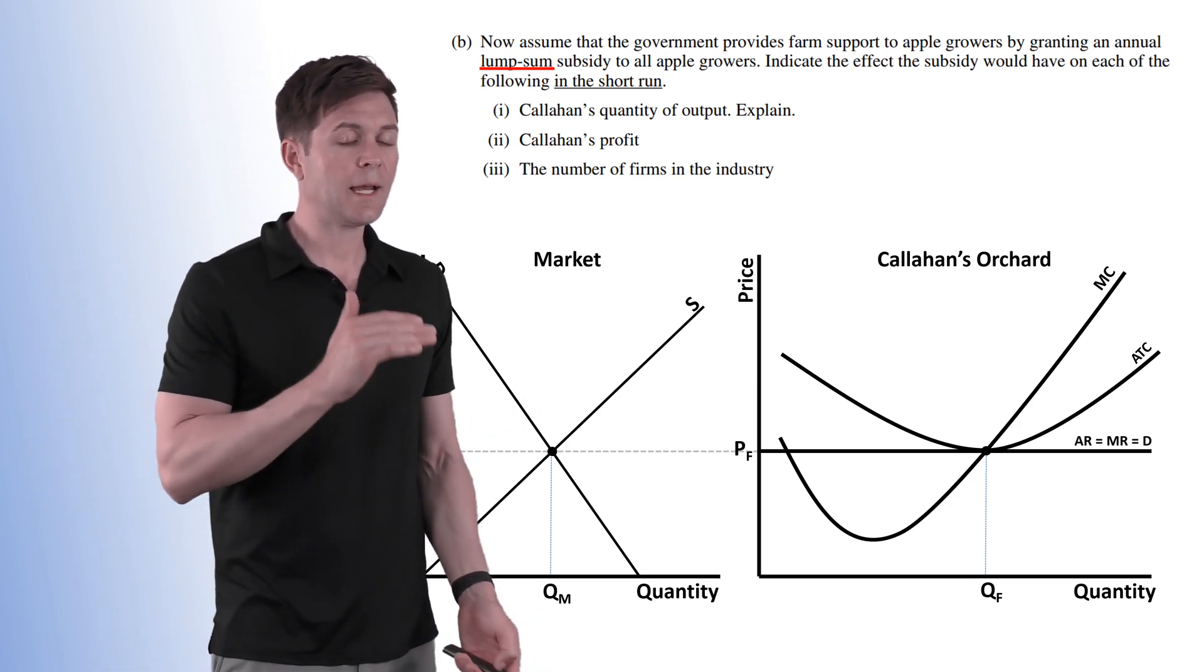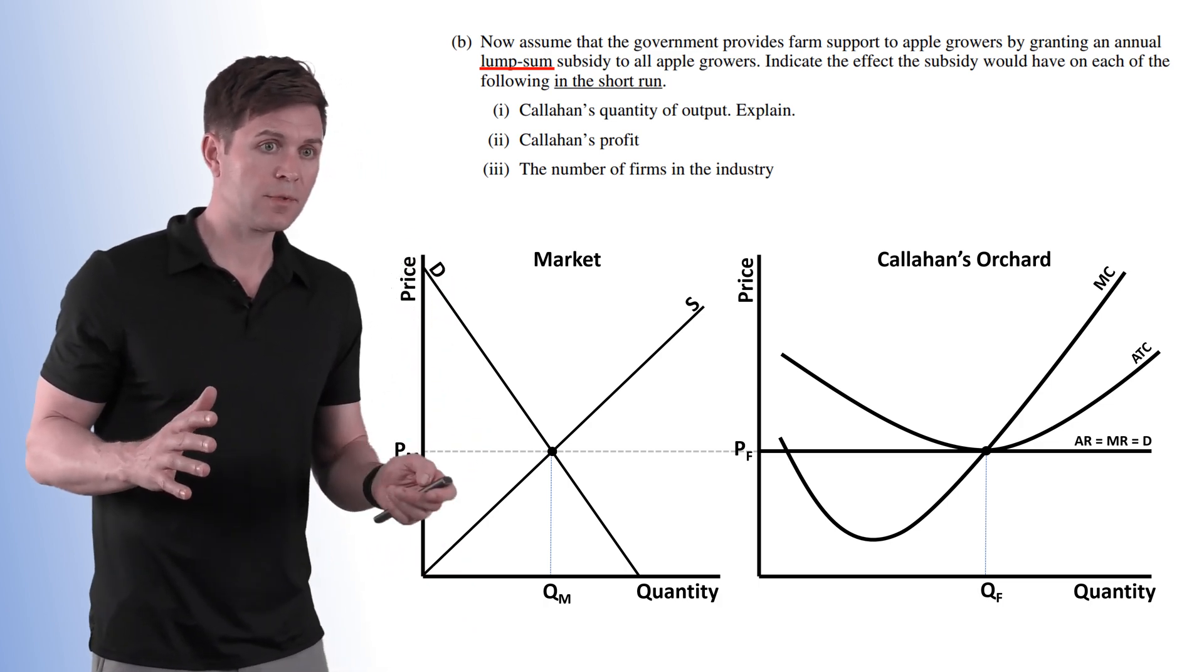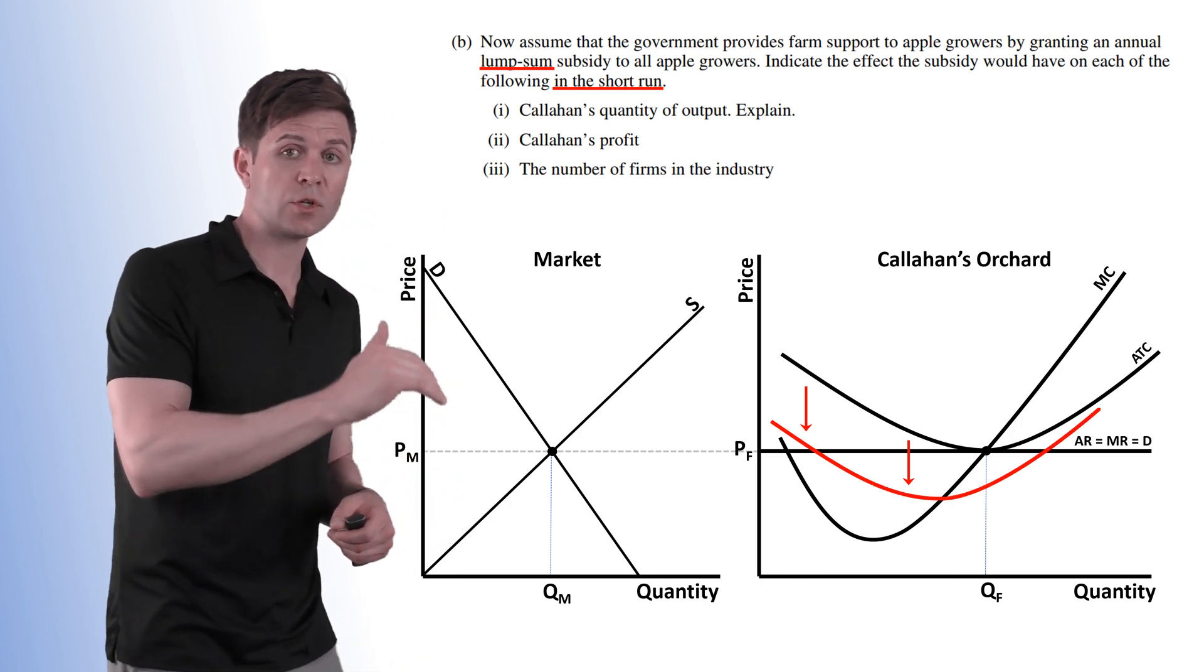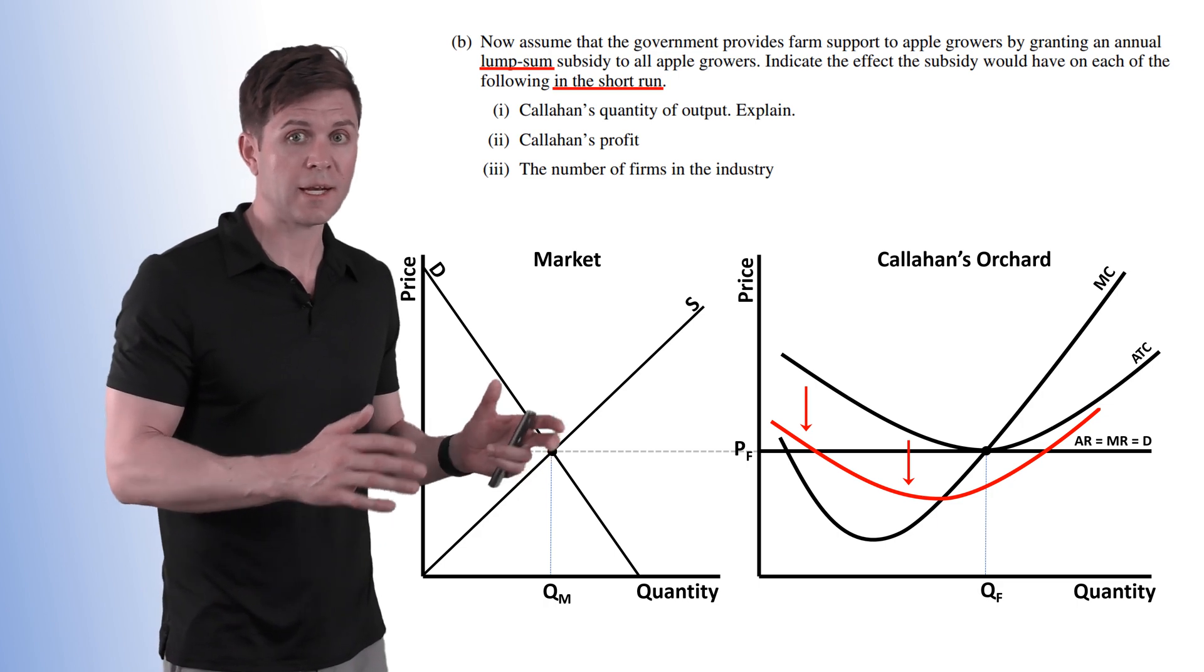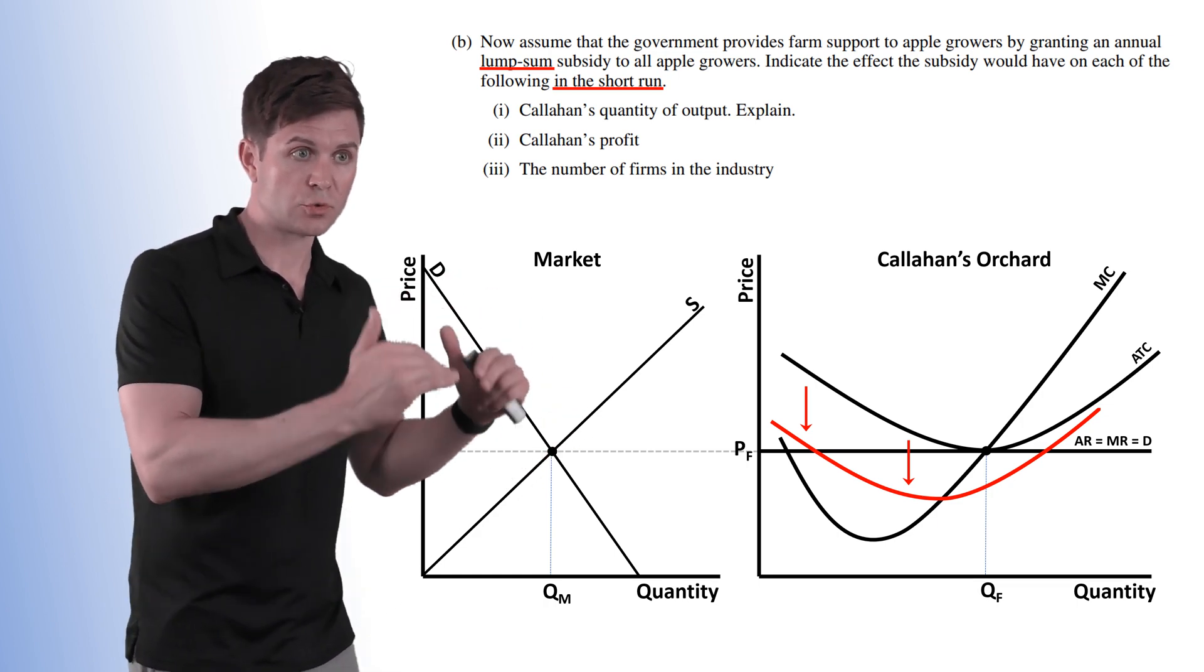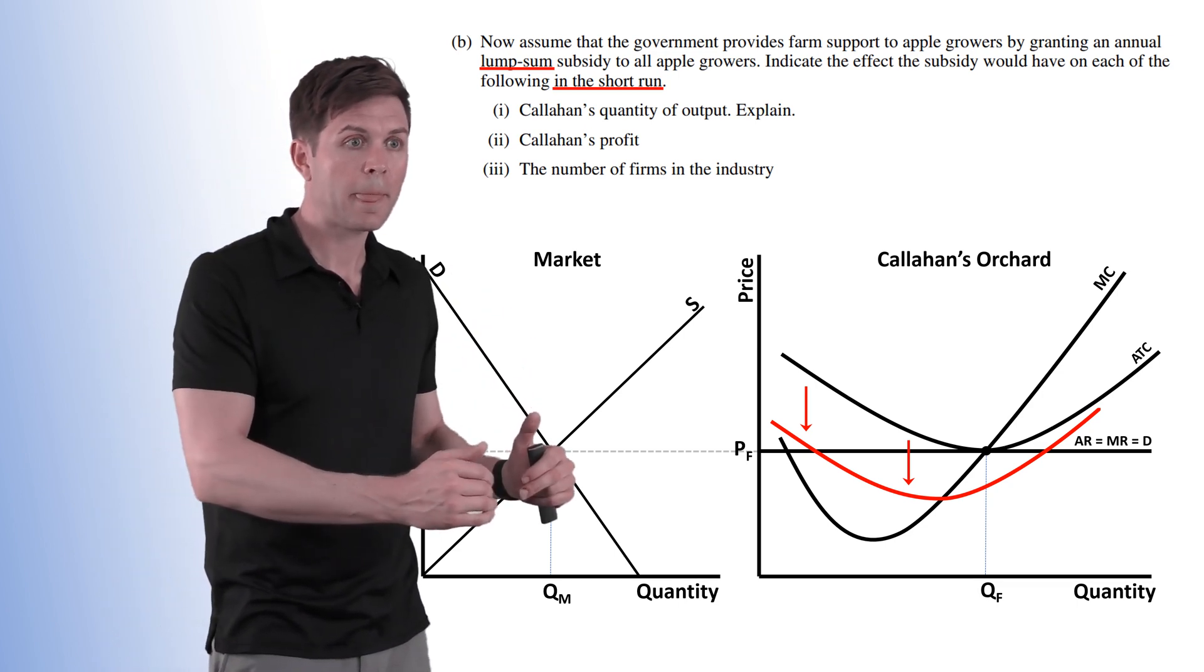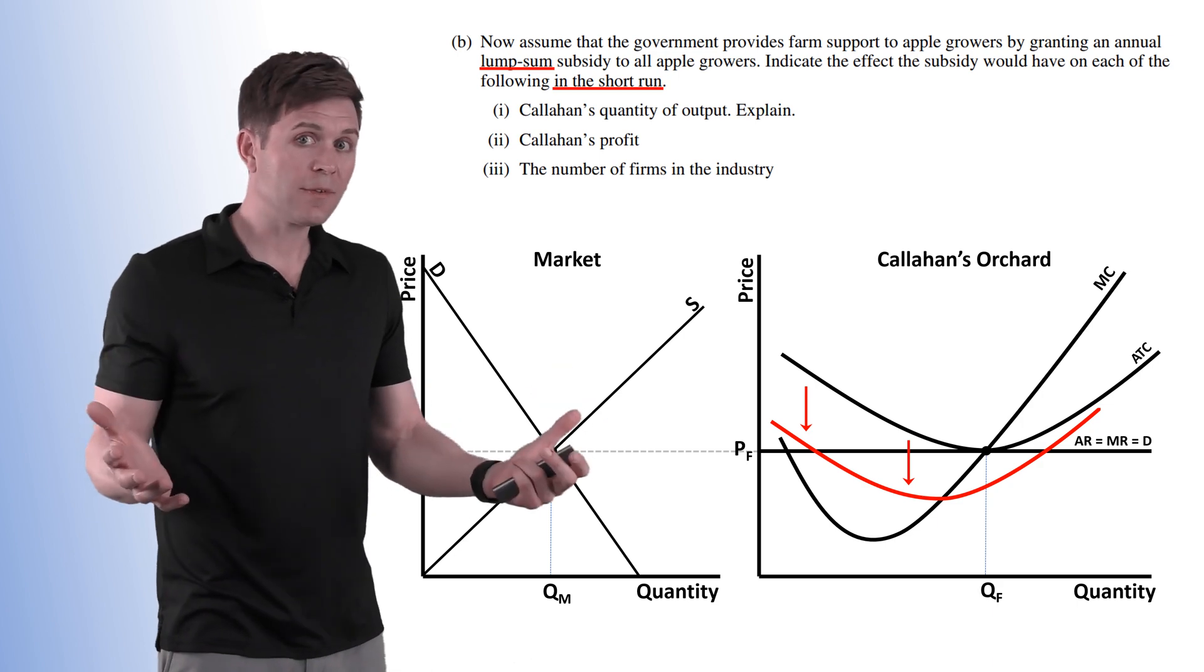So for Part I, Callahan's quantity of output. So when we have a lump sum subsidy, what's actually going to happen in the short run is we're going to see the ATC curve drop down. Because the average total cost of producing at any given level is going to drop because we got this huge subsidy. It helps us produce. It cuts down the cost.